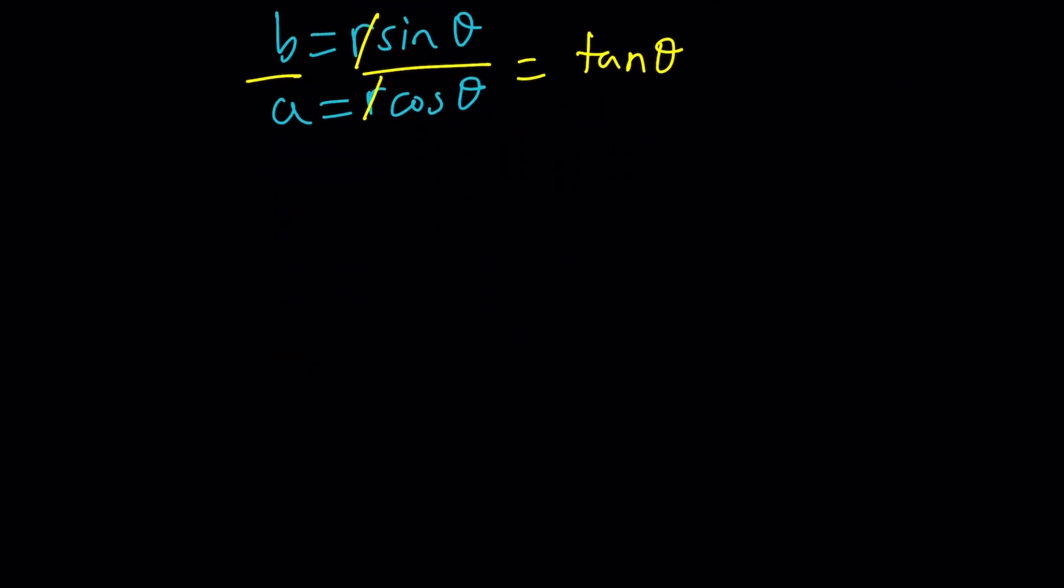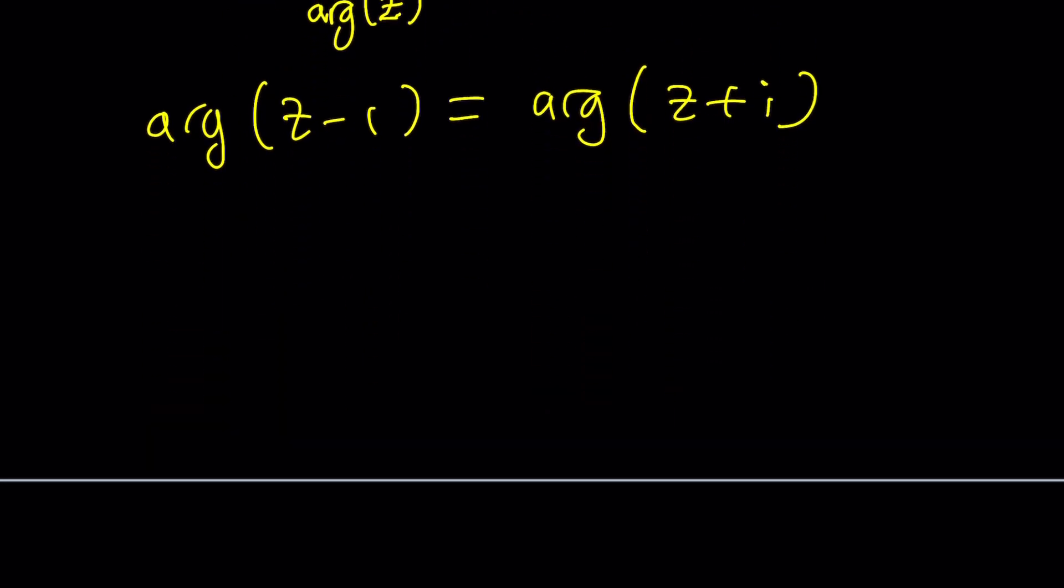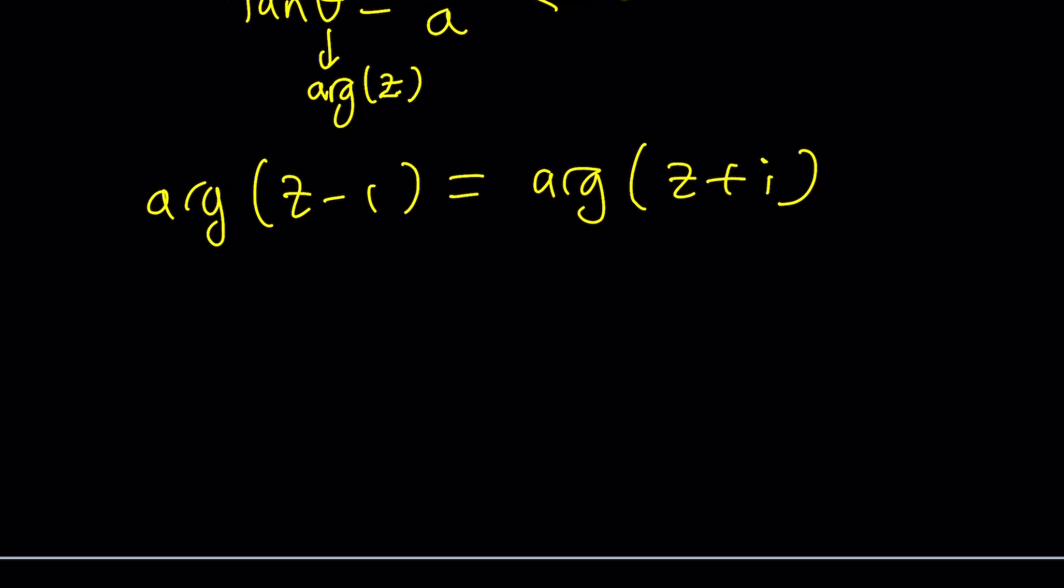Okay, so tangent theta is equal to B over A, that's an important concept that we're going to take from here if our number is basically A plus BI. And theta is the argument of Z. So how do we use that information? We have an equation that sets two arguments equal to each other. Argument of Z minus one equals argument of Z plus I. So how do we know which Z values are going to satisfy this? Are we going to test all the numbers? No.